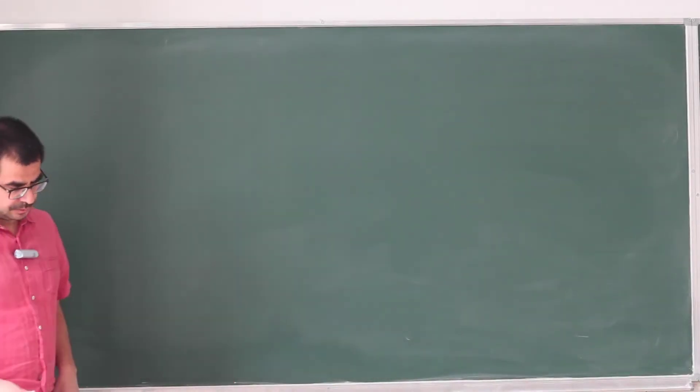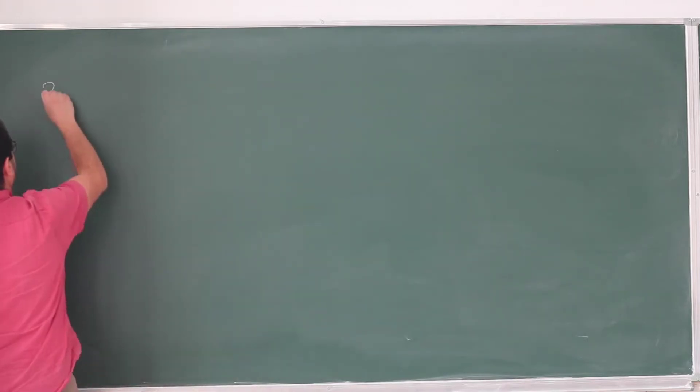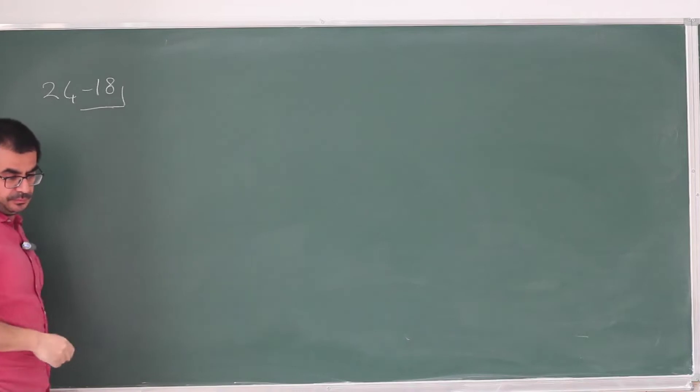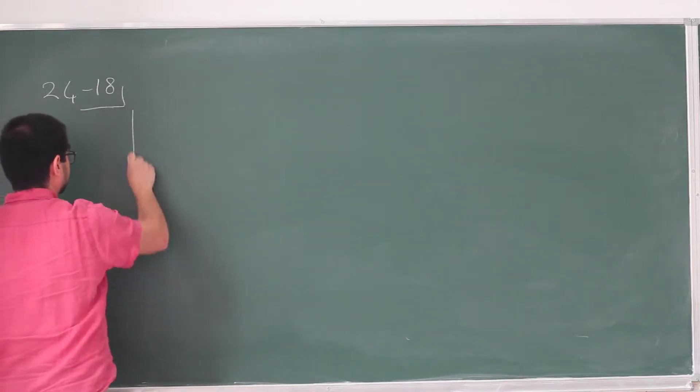Okay, so here I'm going to look at problem 18 from chapter 24. And this is a variation on one of the examples that we already covered, the parallel plate capacitor.